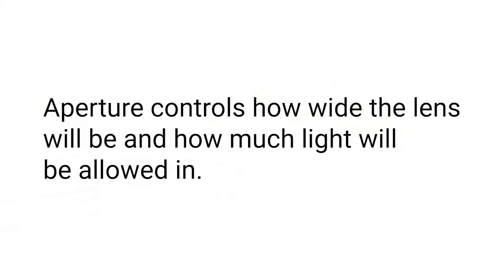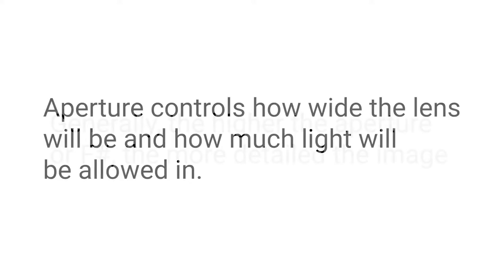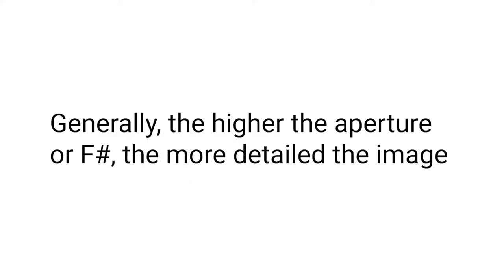We control how much of a photo is in focus by setting the camera's aperture — that means setting how wide the opening that lets light into the camera will be, something like the pupil in your eye. The smaller the opening, the more of the image will be in focus. To achieve this, we set the aperture on the camera higher. This is usually indicated with an F-stop: the letter F followed by a number.